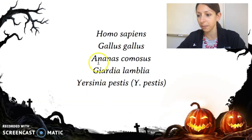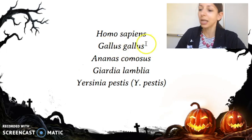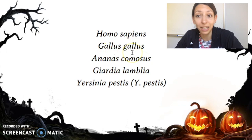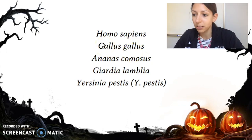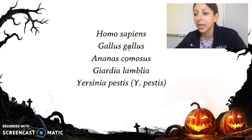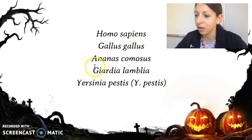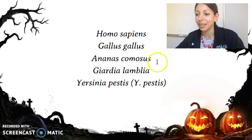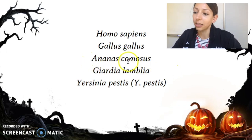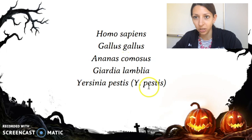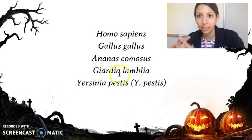Let's look at some examples. Homo sapiens — that's us. Gallus gallus — that is the chicken. The first G is capital, the second g is lowercase, two words, always italicized. Ananas comosus is the pineapple — capital A, lowercase c. Giardia lamblia is one of the parasites we talked about. And Yersinia pestis is the plague.